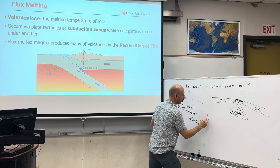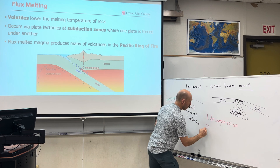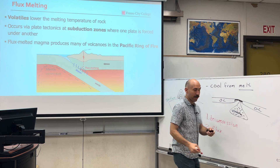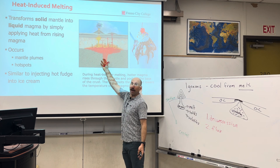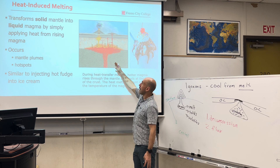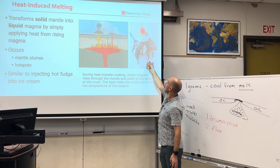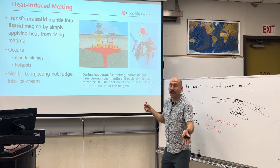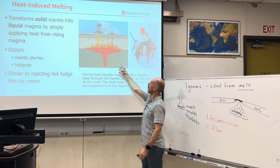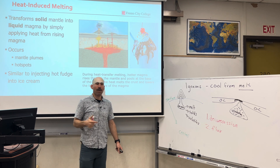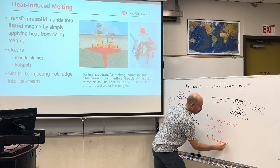Thinking about our three processes: one, decompression; two, flux; and three, heat-induced melting. Heat-induced melting is like when you have hot magma — it can heat up the surrounding rock, melting the adjacent or nearby rock. Kind of like when you inject hot fudge into a sundae: it melts the ice cream because the fudge is hot and heats up the ice cream so it gets a little melty inside. Heat-induced melting occurs at mantle plumes and also hot spots. When something is hot, it can melt the surrounding material.